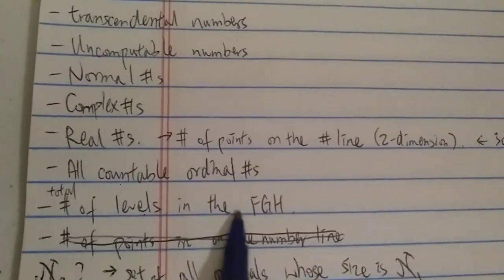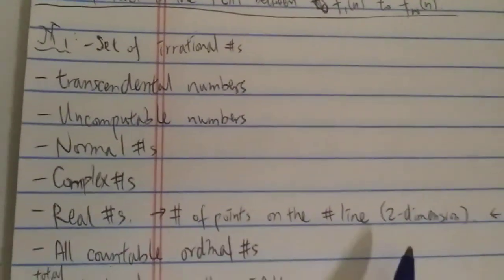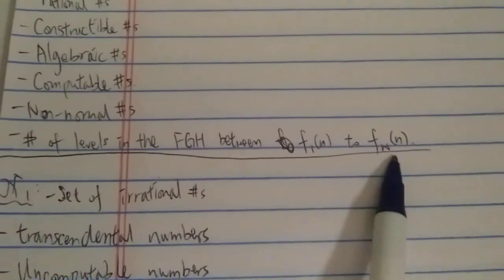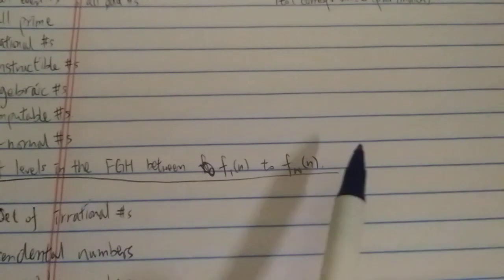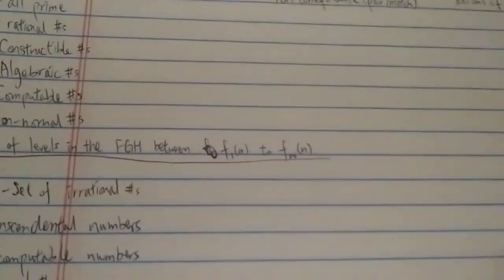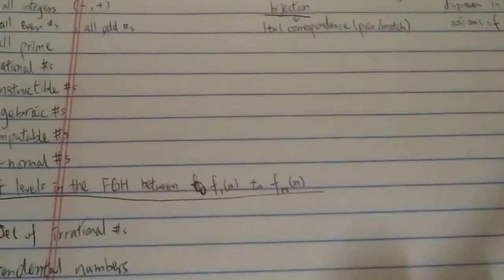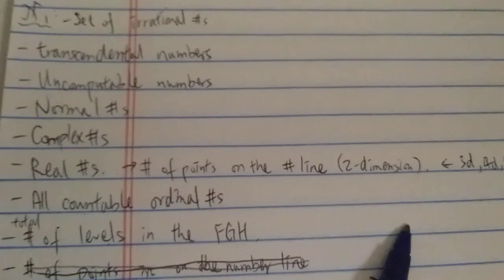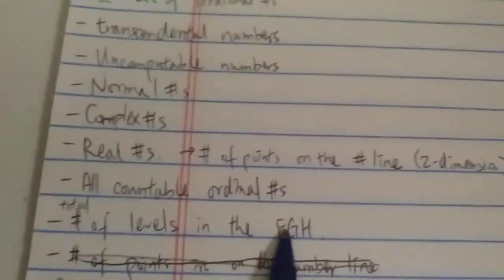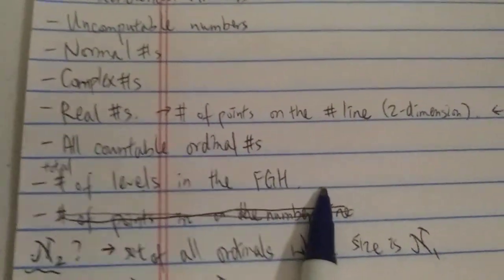And did you get the second answer? The total number of levels in the entire fast-growing hierarchy is actually ℵ₁. Between f₁(n) and f_ω(n) we have ℵ₀ levels, but after ω you can keep going: ω+1, ω+2, ω+3, then ω+ω, ω·ω, ω^ω, ω^(ω^ω), and even new ordinals like epsilon naught, epsilon naught plus one, again and again without limit. Clearly the total number of levels is a bigger kind of infinity — not ℵ₀ anymore, but infinitely bigger, so it belongs to ℵ₁.